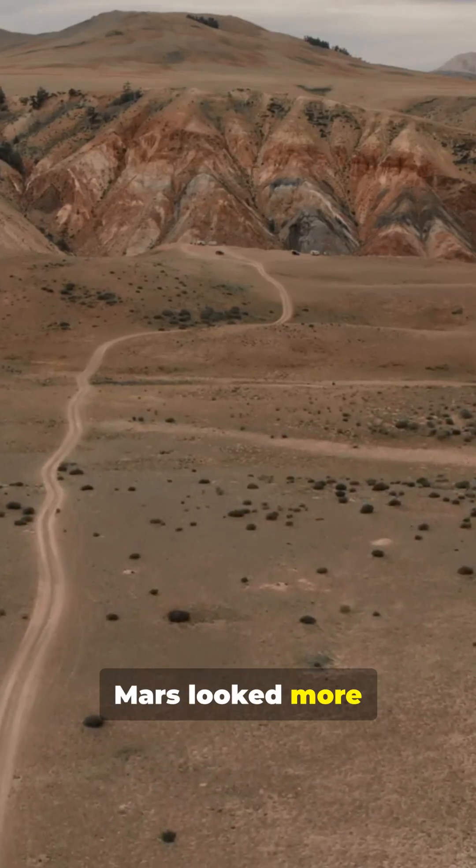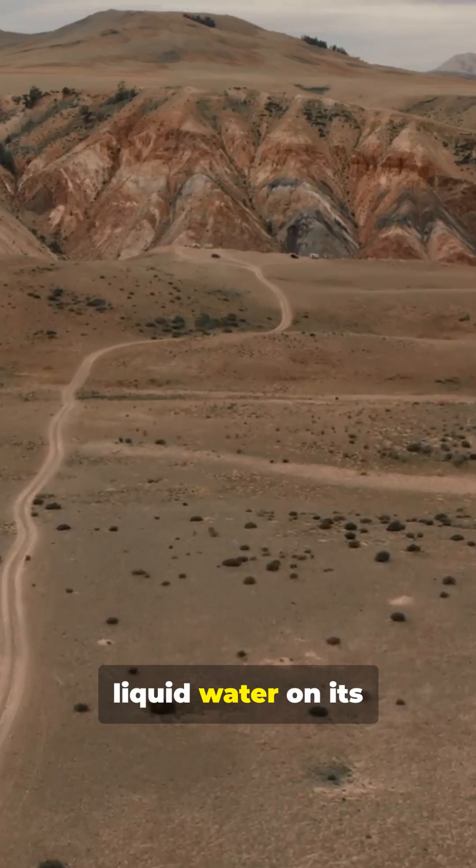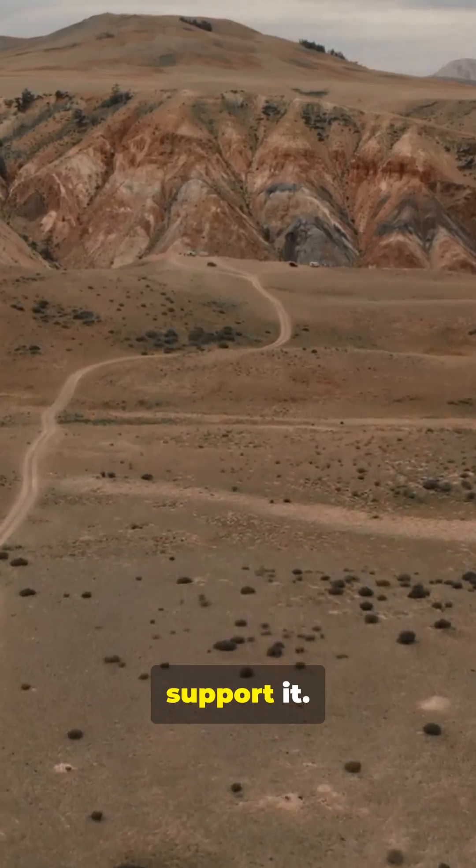Billions of years ago, Mars looked more like Earth, with liquid water on its surface and a climate that could support it.